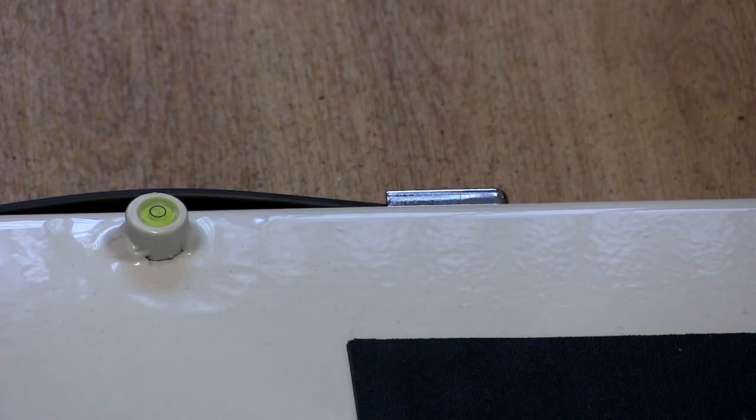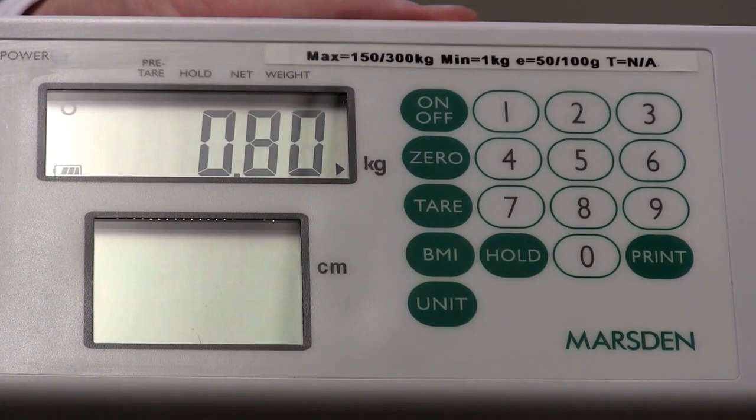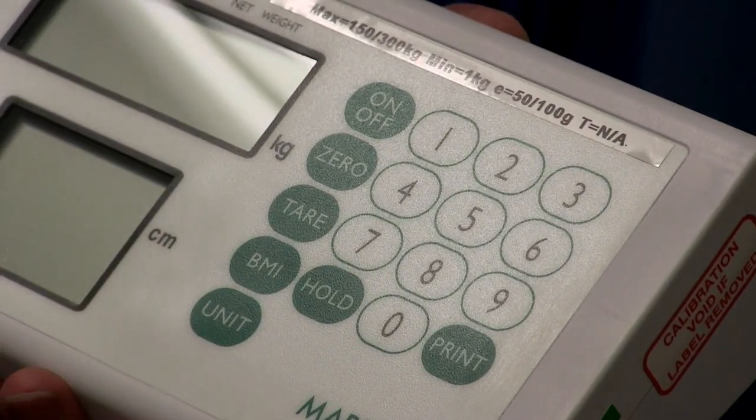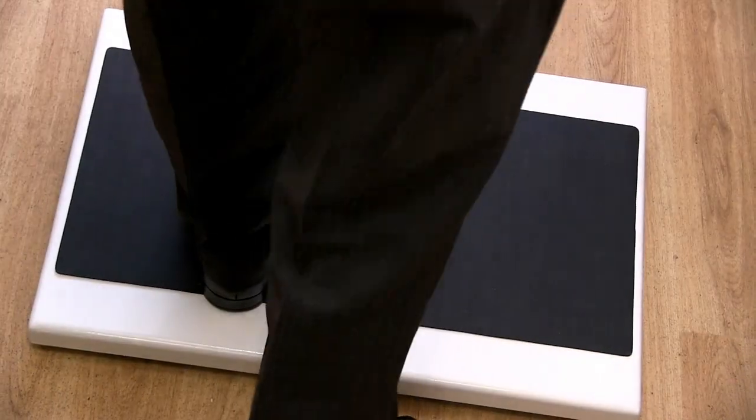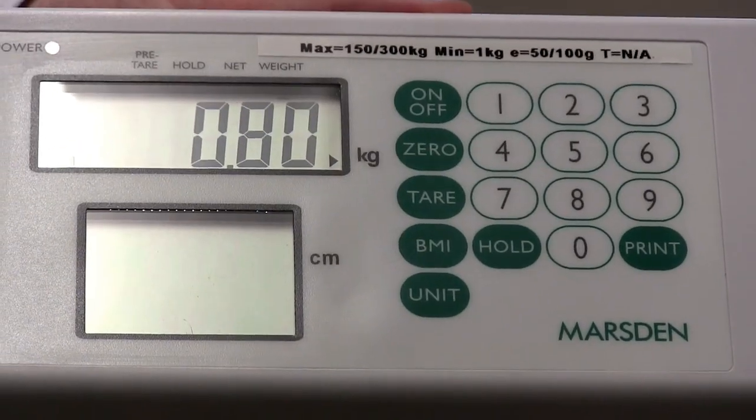The M530 is a Class III approved high capacity and high accuracy scale. With a large yet low profile base, separate indicator for discrete weighing and up to 500kg capacity, it is designed with all patients in mind. Not only is the M530 spacious and very accurate, with increments to 50g, it is also very easy to use.